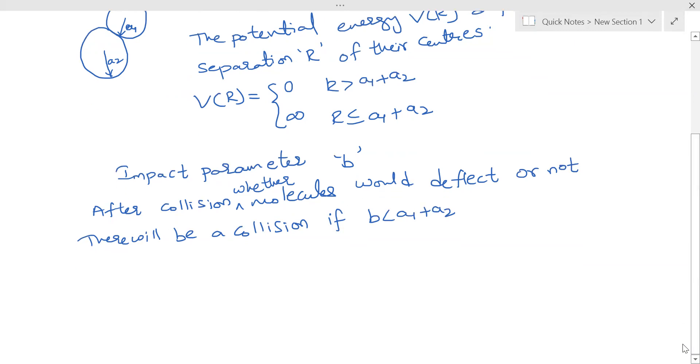Now let us take a tube with a cross section. We have the molecule with radius A1, and we have different molecules in the vicinity with radius A2, with its center here, and there is another molecule like this.